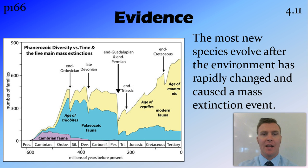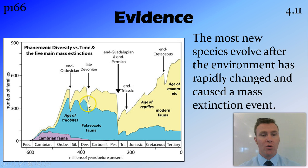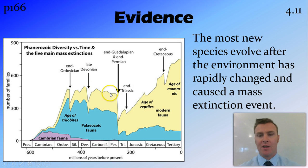So that is punctuated equilibrium: rapid change followed by a period of stasis. A good example is the late Devonian, where you see a big change in the environment causing rapid evolution, and then relative stasis from then on.